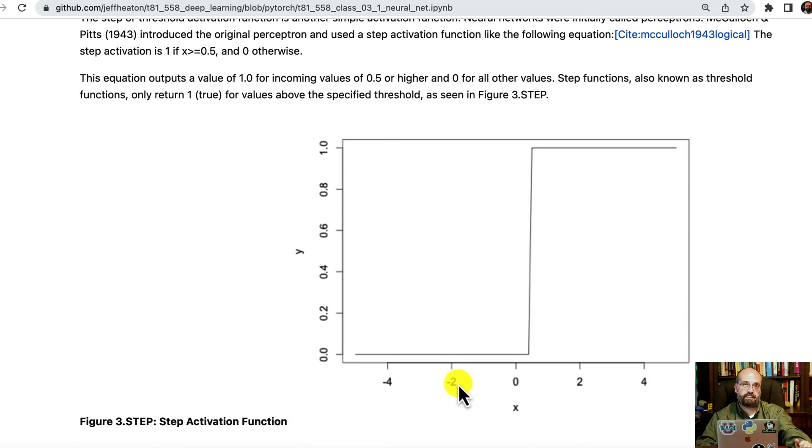Step activation function is used sometimes when you just want to toggle past a value. So here, anything below zero is going to be zero, anything above zero is going to be one.